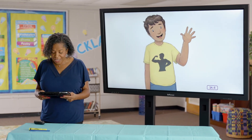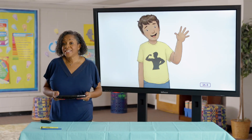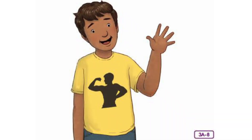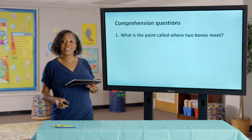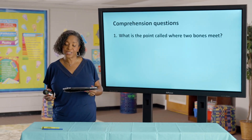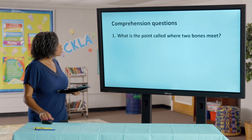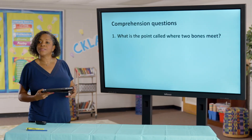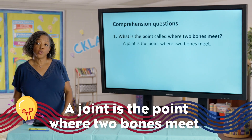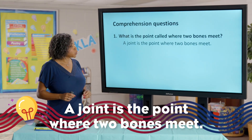The next time we meet, we'll discuss another important body system — one that works closely with your skeletal system to move your bones. For ideas of what the next lesson will be, look at my shirt for a clue. We'll find out next time if you're right. Now let's go into some comprehension questions to see how much you remember about the read-aloud today. Our first question: what is the point called where two bones meet? A joint. It's called a joint — a joint is the point where two bones meet.